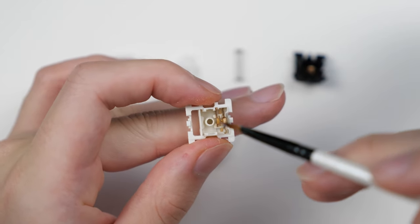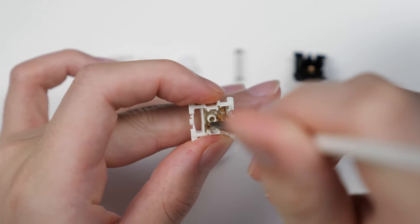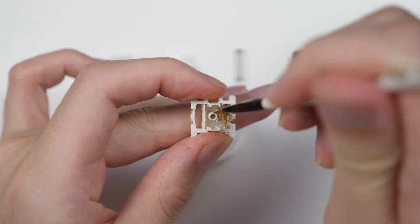Next you want to lube the floor of the bottom housing, the center column on the outside and on the inside. This will help lubricate a bit of the spring bottom and make the stem move down even smoother.